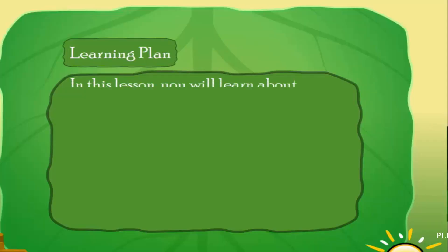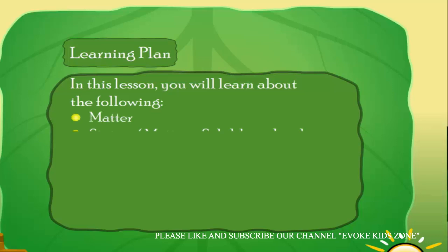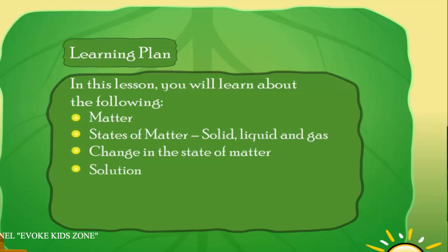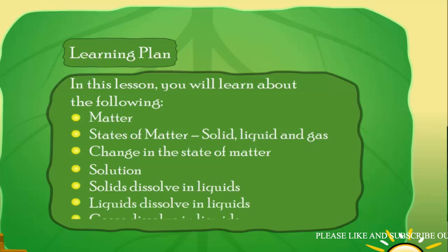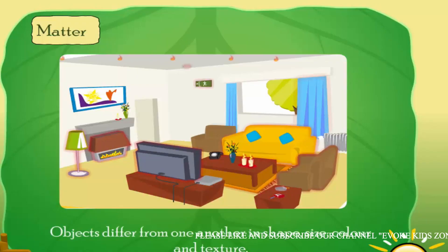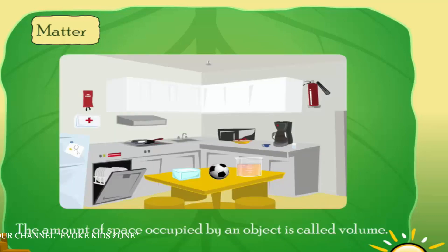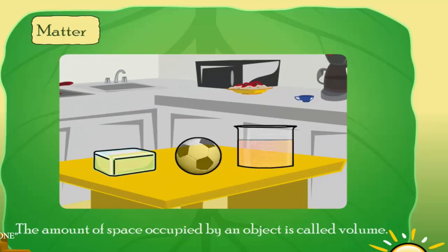In this lesson you will learn about the following: matter, states of matter (solid, liquid, and gas), change in the state of matter, and solutions. Solids dissolve in liquids, liquids dissolve in liquids, and gases dissolve in liquids. Objects differ from one another in shape, size, color, and texture. The amount of space occupied by an object is called its volume.